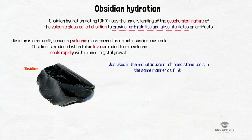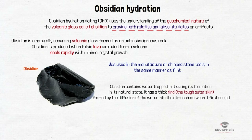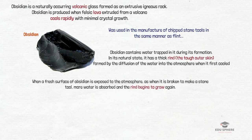Obsidian contains water trapped in it during its formation. In its natural state, it has a thick rind — the tough outer skin — formed by diffusion of water from the atmosphere when it is first cooled; the technical term is hydrated layer. When a fresh surface of obsidian is exposed to the atmosphere, as when it is broken to make a stone tool, more water is absorbed and the rind begins to grow again. That new rind is visible and can be measured using high-power magnification.